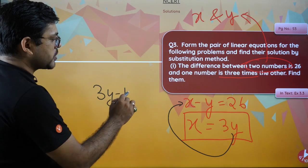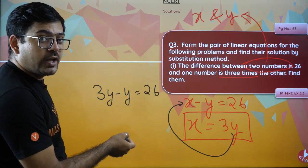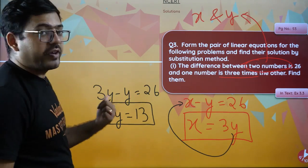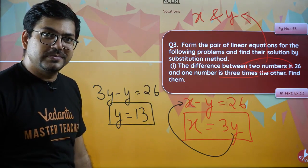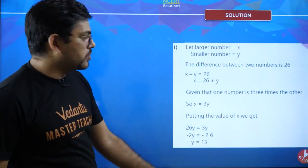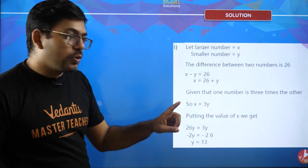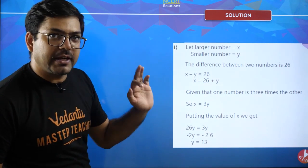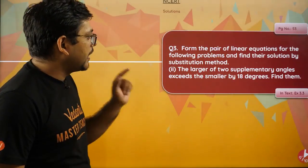Substituting: 3y - y = 26. Solving: 2y = 26, so y = 13. y equals 13. Now putting y = 13 into x = 3y: x = 13 × 3 = 39. So x = 39 is the answer. I had accidentally forgotten to mention this, but that is the solution — y = 13 and x = 39.